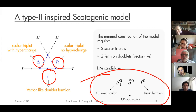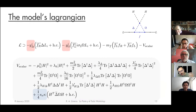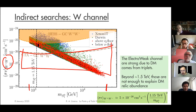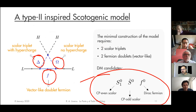Another motivation is that there are not many consistent dark matter models in the TeV range. The doubly-charged component of the triplet is very nice from a collider perspective, though producing it at the TeV scale is challenging for the current LHC.